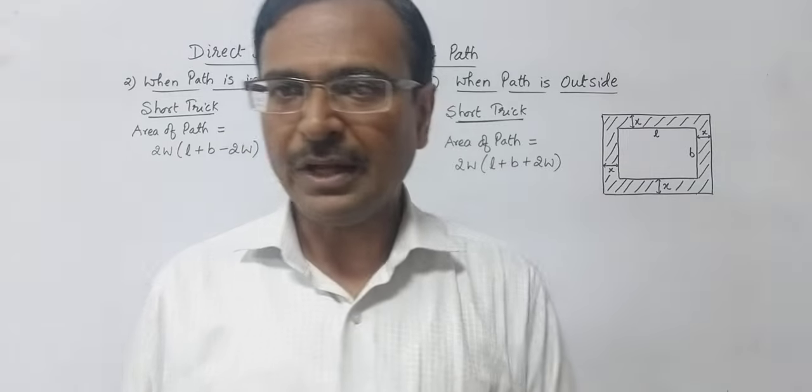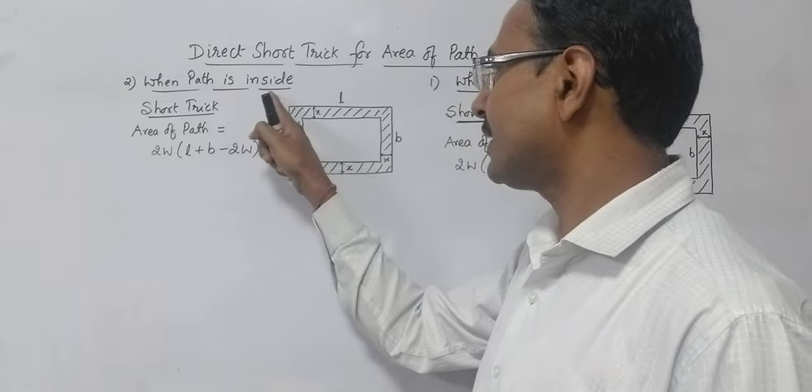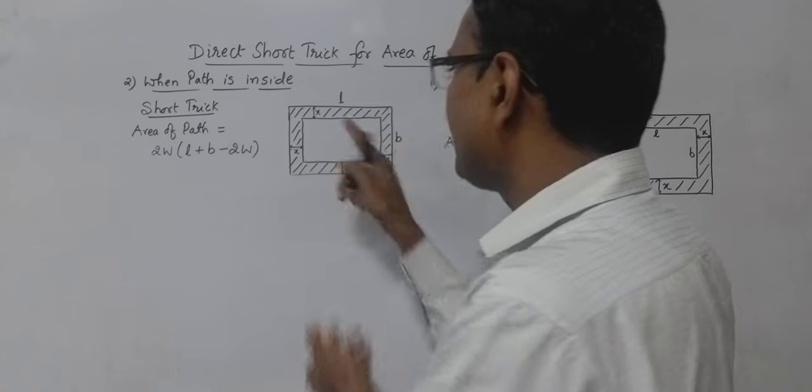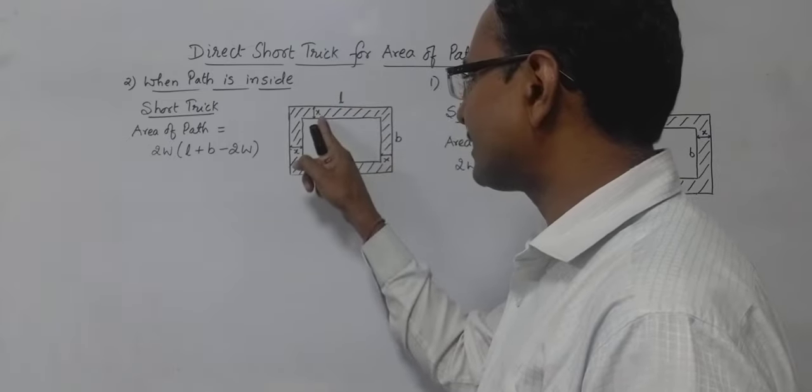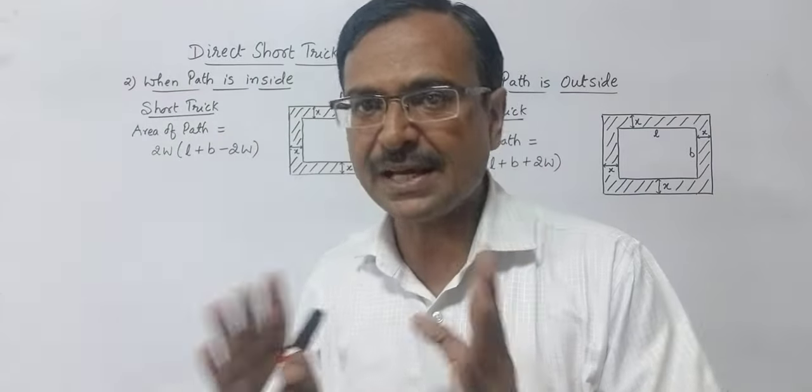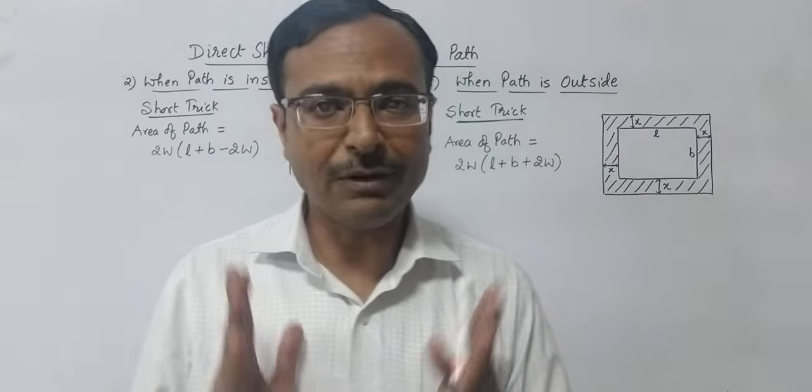And similarly, when you have a question in which the path is inside the plot. So this is the plot now outside and the path is on the inside boundary. So outer length and outer breadth are given to you and the width of the path is given to you. So again, you need to find the shaded area, that is the area of the path which is inside the plot. So in both the cases, a very important short trick will work out for you.